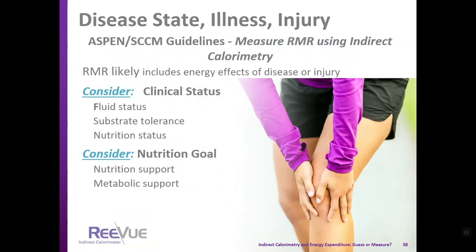For disease state, illness, or injury, the ASPEN and SCCM guidelines state you should measure resting metabolic rate using indirect calorimetry. When RMR is measured in the presence of disease, illness, or injury, it likely includes the energy effects of that condition. The clinician then needs to consider clinical status, fluid status, substrate tolerance, nutrition status, and nutrition goal — whether providing nutrition support to meet needs, or metabolic support for specific goals — to determine how many calories to give.